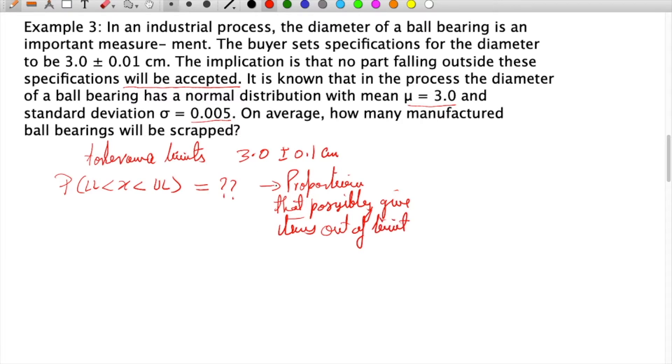That way we can know what percentage of ball bearings will fall as scrap. To see this, the limits are 2.9 to 3.1, so we have to find the probability within this range.